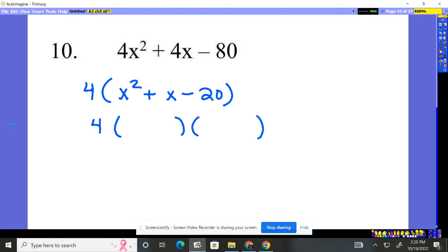So now we break this down. It's going to be a 4. And then let's figure out our binomials, our two binomials. So we want to create a negative 20. So one's going to be negative, one's going to be positive. What multiplies together to give us 20?